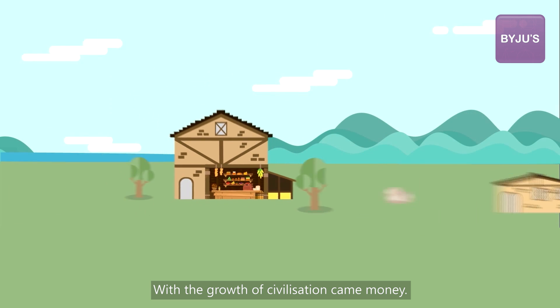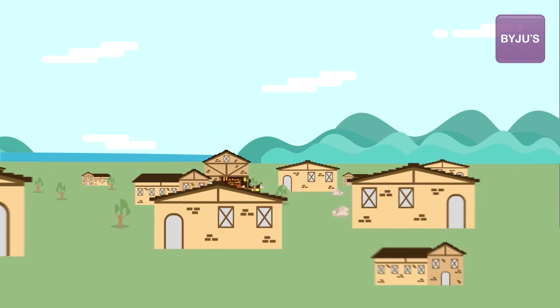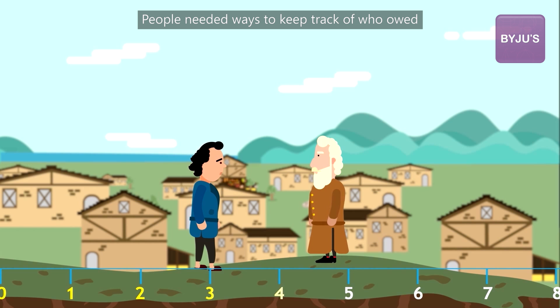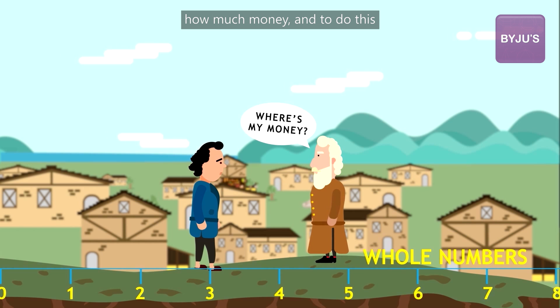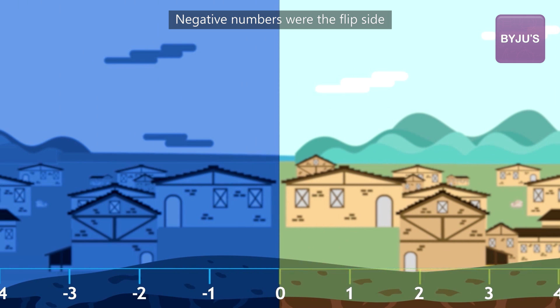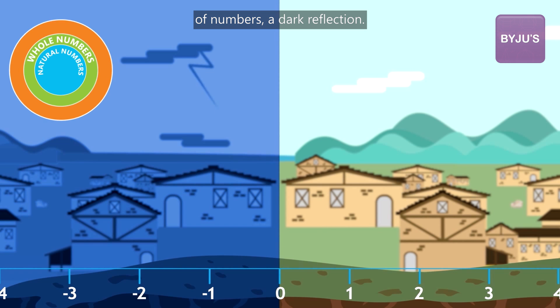With the growth of civilization came money. With money came debt. People needed ways to keep track of who owed how much money. And to do this, we created negative numbers. Negative numbers were the flip side of numbers, a dark reflection.